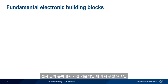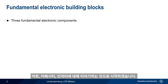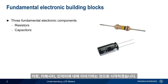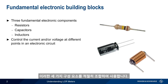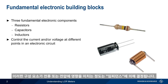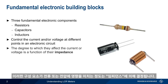Let's start by talking about the three most fundamental building blocks in electronics, namely resistors, capacitors, and inductors. Almost all electronic devices use some combination of these three components to control the current and/or voltage at different points in a circuit. The degree to which these components affect the current or voltage is a function of their impedance.